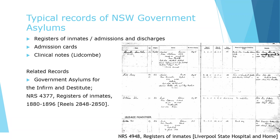Admission cards are another type of record we hold for some government asylums, generally providing similar information to the Register of Inmates. There are also clinical notes from Lidcombe State Hospital, which are more comprehensive than registers and admission cards but still incomplete for some periods. These clinical notes contain the official admission form detailing the patient's personal history, a general summary of the medical history, clinical notes and correspondence. Within the Government Asylums for the Infirm and Destitute Branch, we also hold a series of registers of inmates covering 1880 to 1896, copied onto microfilm reels and available in our Reading Room.